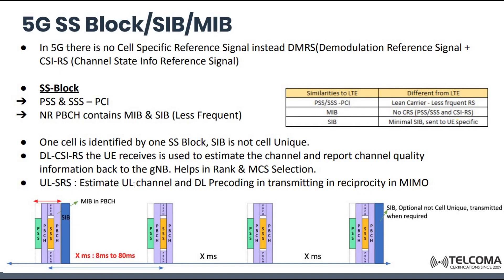For SRS, it's an uplink channel and downlink recording is transmitted in reciprocity in MIMO. This is simply for gNodeB reciprocity — what it receives from the UE. The UE transmits a particular signal to the gNodeB and the gNodeB reproduces it in the downlink so that the best can be made out of it.